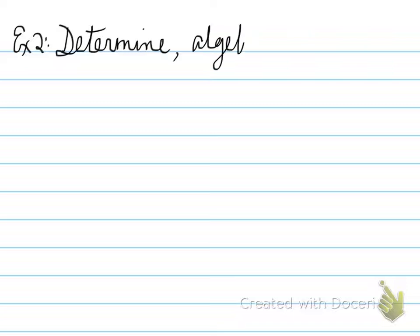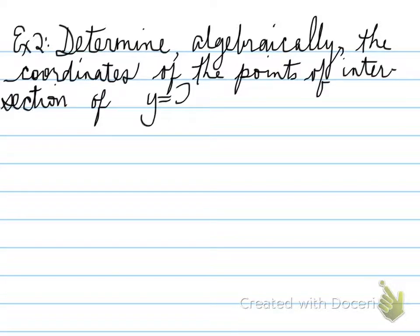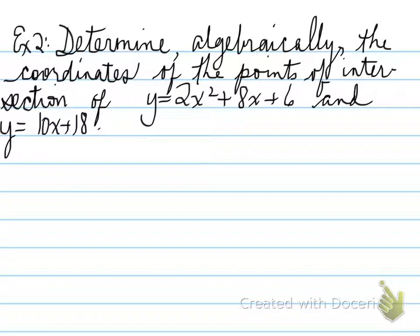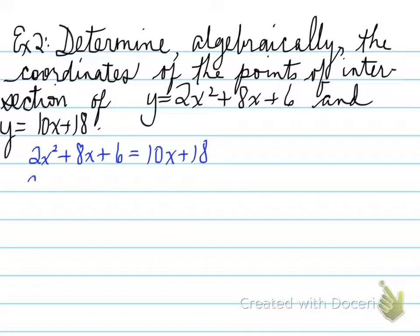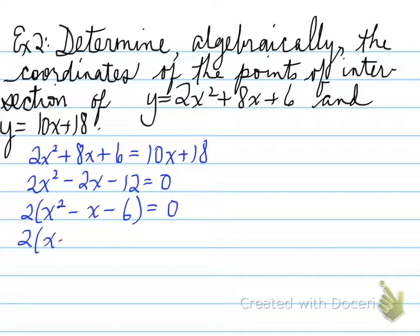Example two. Determine algebraically the coordinates of the points of intersection of y equals 2x squared plus 8x plus 6, and y equals 10x plus 18. We set the two equations equal to each other, bring everything to one side to make it equal 0, then factor — common factor first, and then factor the internal trinomial. We need two numbers that multiply to give negative 6 and add to give negative 1, which are negative 3 and negative 2.